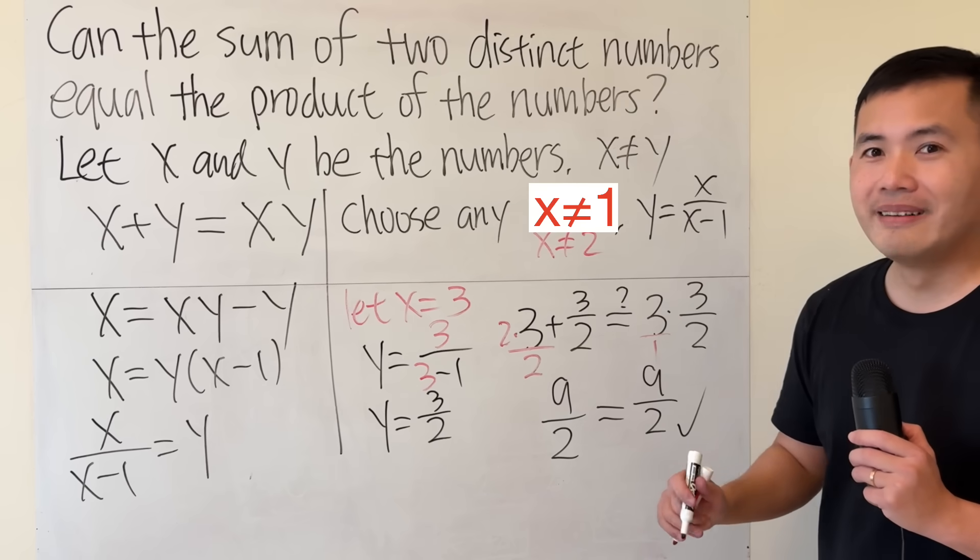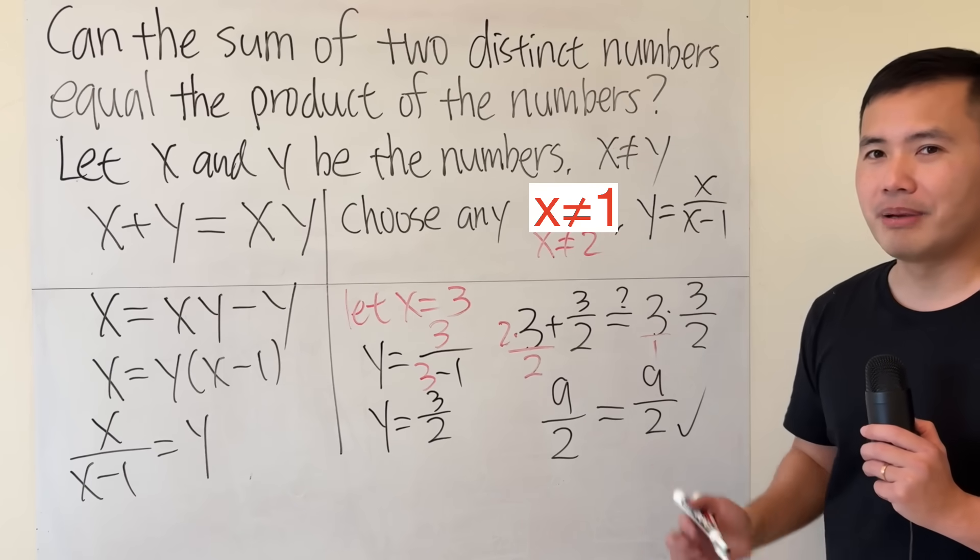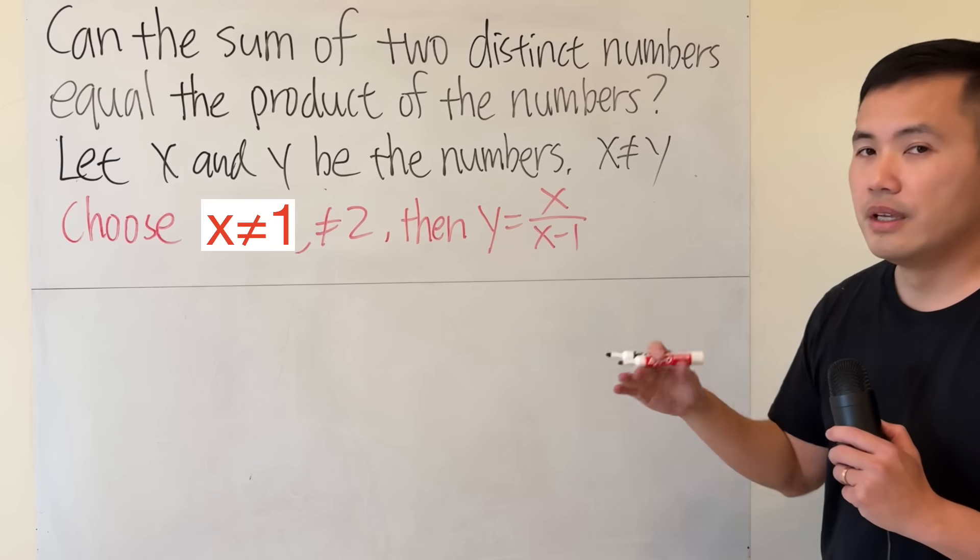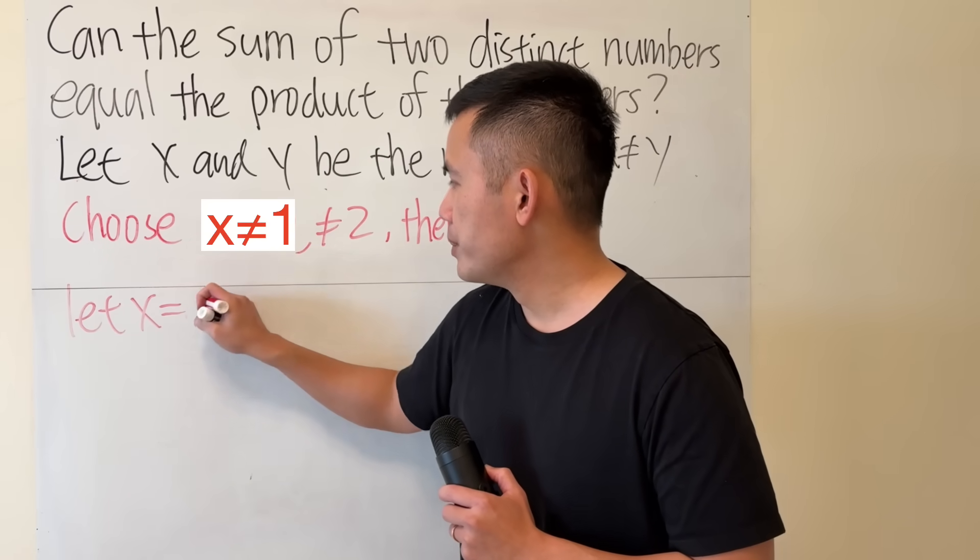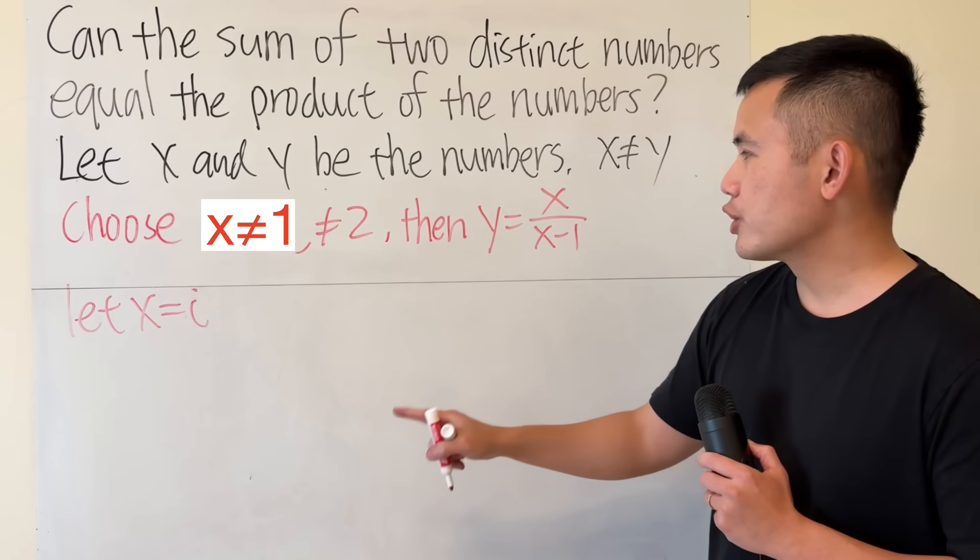You can pick anything that you want. In fact, you can also do it with complex numbers. Let's have a look. So right here, I'm going to say let x be i. And I'm just going to work that out.